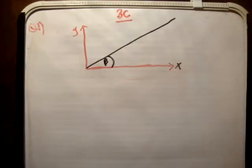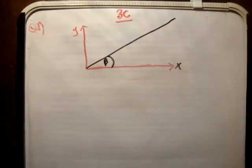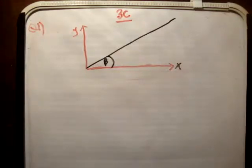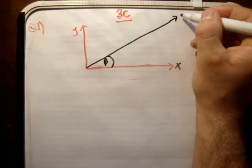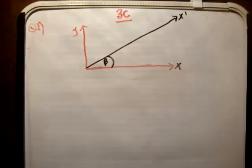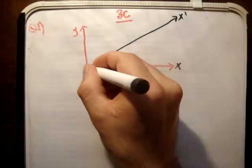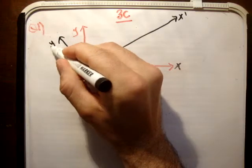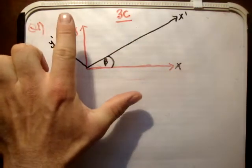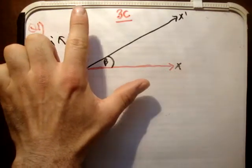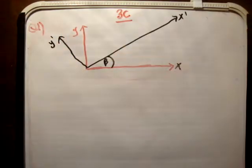The next thing we need to do is make a new xy plane — an x prime, y prime plane. For this, we let the x prime axis be parallel with the incline. That's why I drew the incline in black — that's going to be my new x axis, the x prime axis. The y prime axis is perpendicular to it. What we've done is picked up the xy plane and rotated it anti-clockwise by beta degrees.